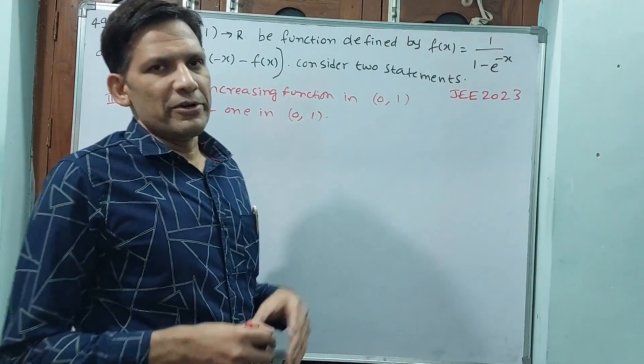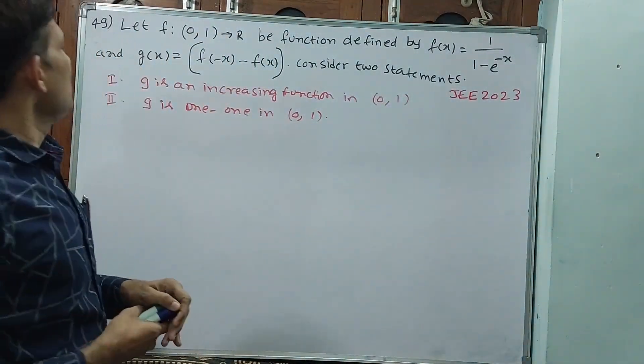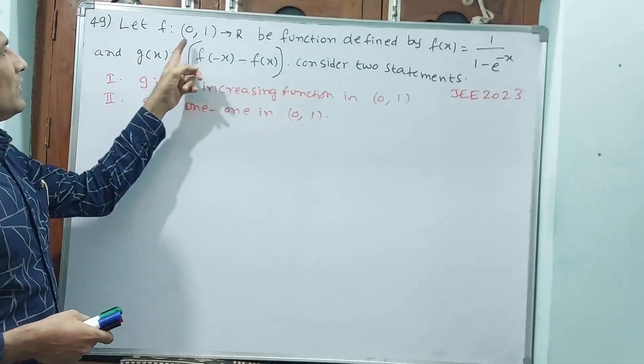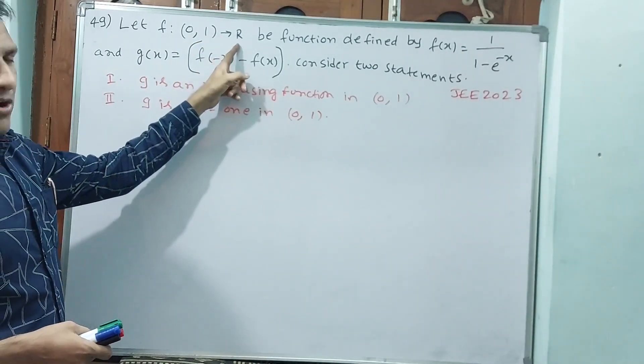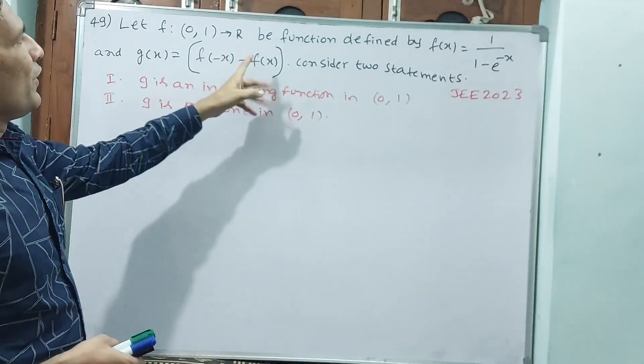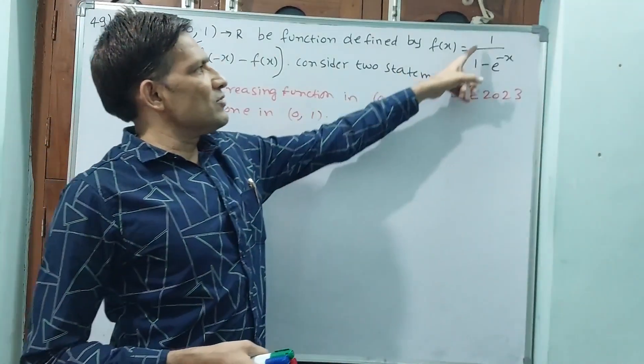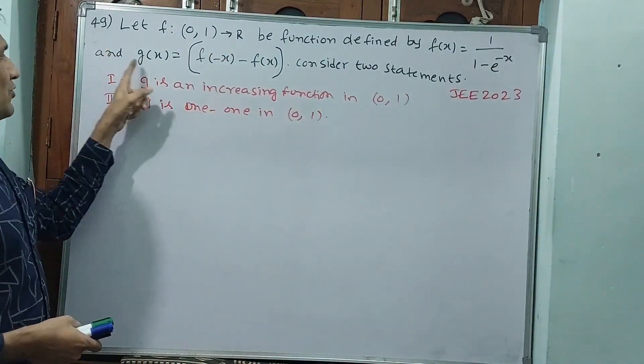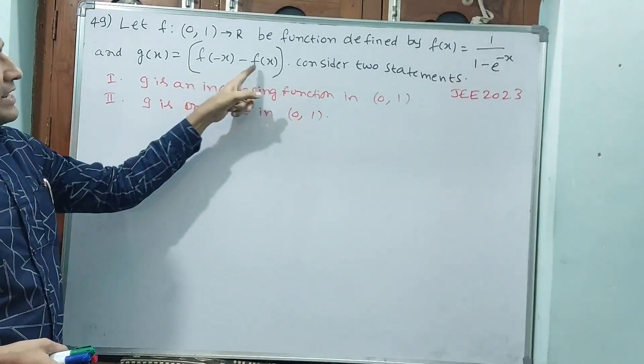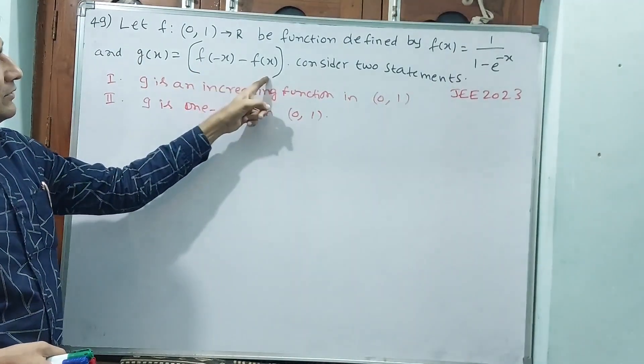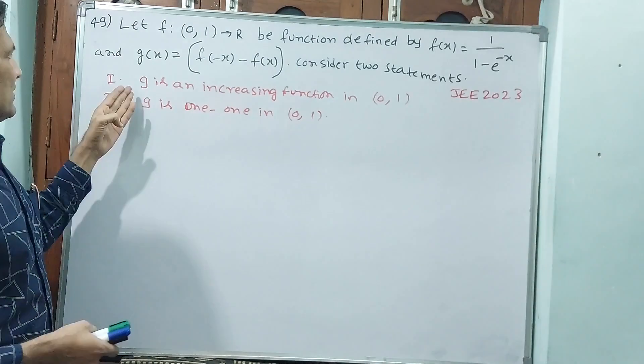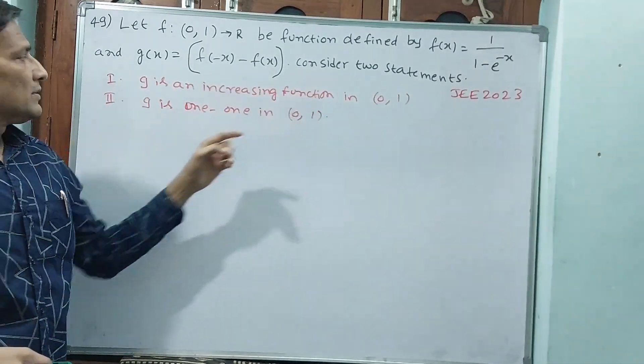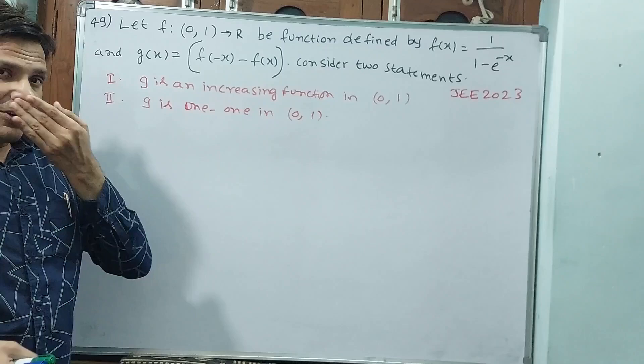Okay, let us see calculus we will do. See, let f: (0,1) to R be function defined by f(x) = 1/(1 - e^(-x)) and g(x) = f(-x) - f(x). Consider two statements: g is an increasing function in (0,1), and g is 1-1 function in (0,1).